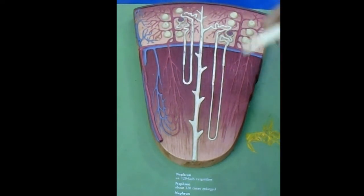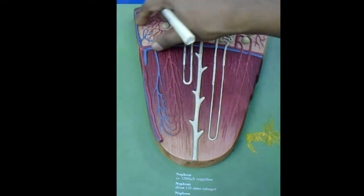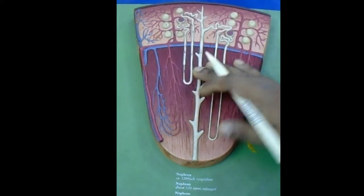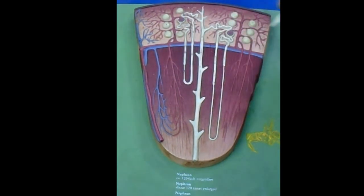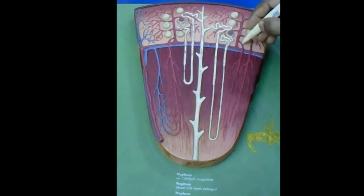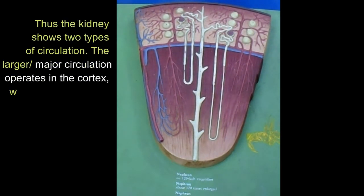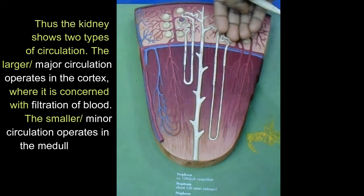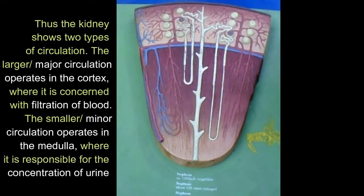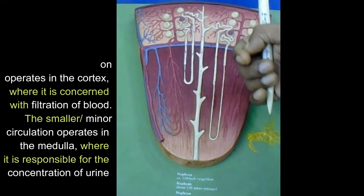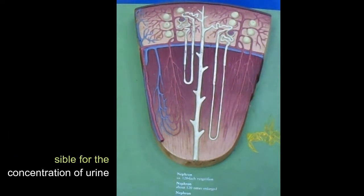It is evident that a major part of the renal blood circulates through the cortex, while the medulla is dependent for its blood supply on efferent arterioles from the juxtamedullary glomeruli. Thus, the kidney shows two types of circulation: the larger circulation operates in the cortex, where it is concerned with filtration of blood; and the smaller circulation operates in the medulla, where it is responsible for the concentration of urine.